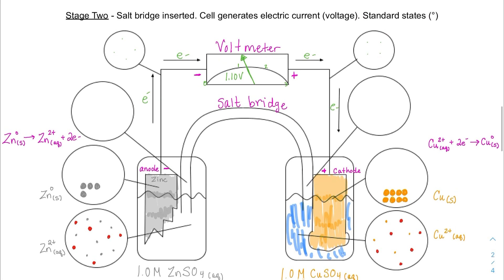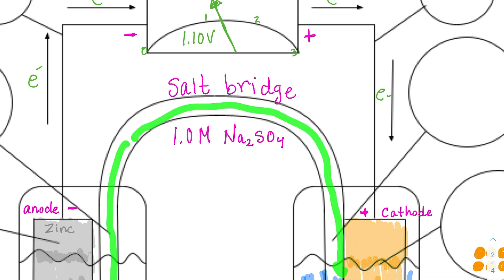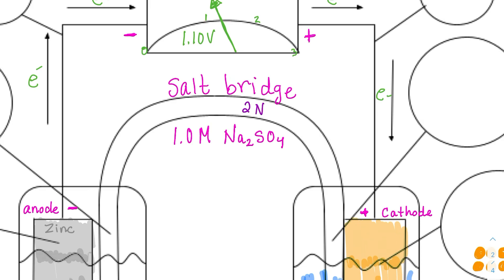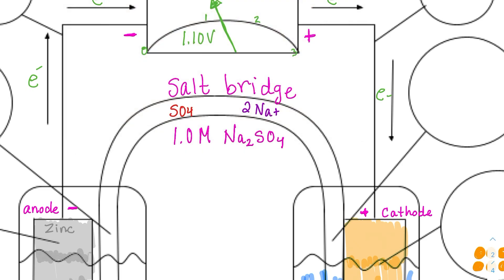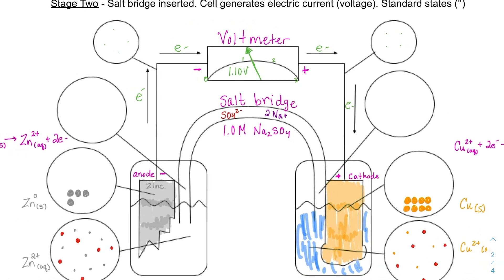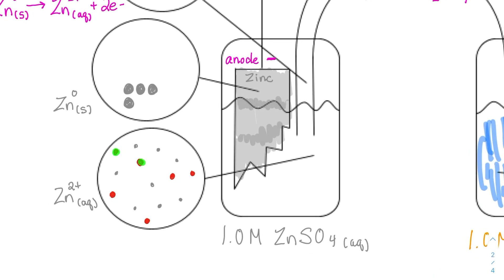Now let's talk about what's going on in the salt bridge. The salt bridge is one molar sodium sulfate solution soaked into what is usually filter paper. That means we have sodium ions and sulfate ions — two sodium ions for every one sulfate ion. We need to decide: are the sulfates going into the zinc half-cell or the copper half-cell, and similarly for the sodium ions?